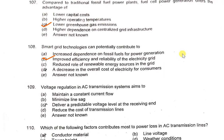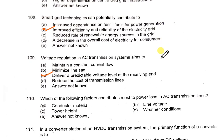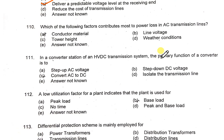Voltage regulation in AC transmission systems aims to deliver a predictable voltage level at the receiving end. Which of the following factors contributes most to power loss in an AC transmission line? It is the conductor material.